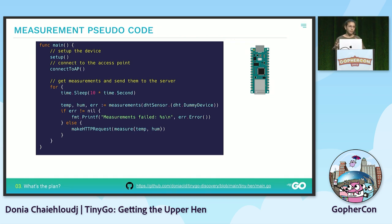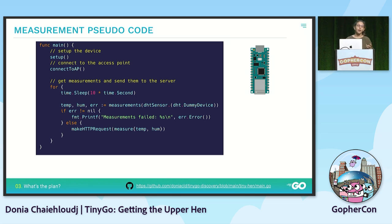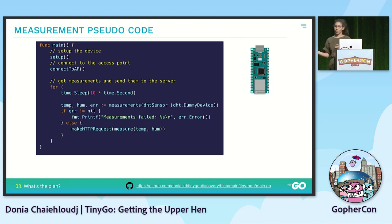Here is the main function - this is pseudocode, modified a bit, but the idea is there. First I set up my device using pin D6 as input/output. I connect to the access point. Then every 10 seconds I ask the DHT to send a measure and receive back temperature, humidity, and an error. In case of failure, I print it; otherwise I send the values through HTTP to my web server on my laptop.